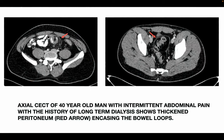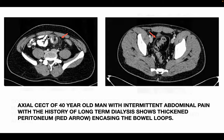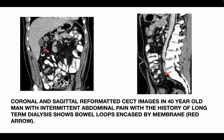This is another case of a 40-year-old man on long-term peritoneal dialysis who presented with a history of intermittent abdominal pain. The axial CCT shows thickened peritoneum (red arrow) encasing the bowel loops. Coronal and sagittal reformatted CCT images of the same patient further demonstrate the bowel loops encased by the fibrotic membrane.